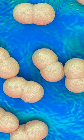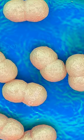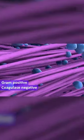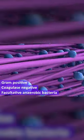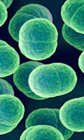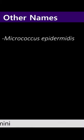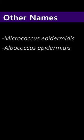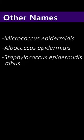Staphylococcus epidermidis is a gram-positive, coagulase-negative, facultative anaerobic bacteria found in human normal flora. It is a normal skin flora and less commonly found in mucosal flora. Other names used for this organism are Micrococcus epidermidis, Albococcus epidermidis, and Staphylococcus epidermidis albus.